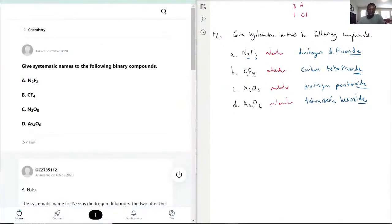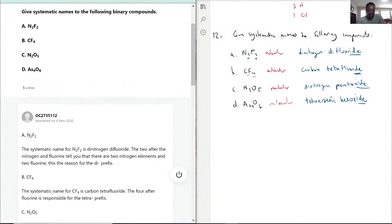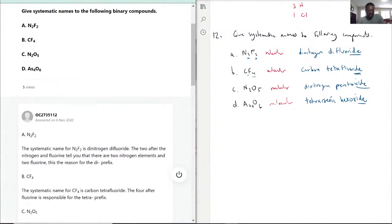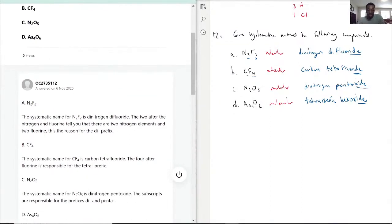So yes, N2F2, dinitrogen difluoride. Awesome. We got that. Carbon CF4, carbon tetrafluoride, perfect. N2O5, dinitrogen pentoxide. Awesome again. And now moment of truth, arsenic trioxide.